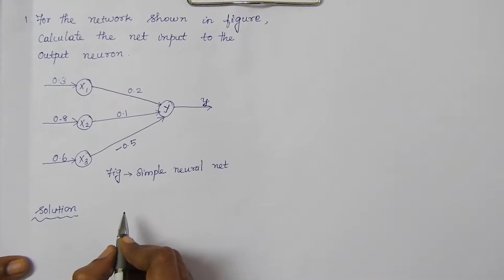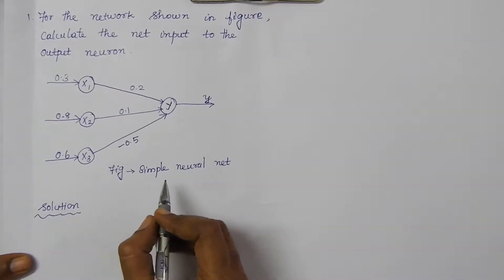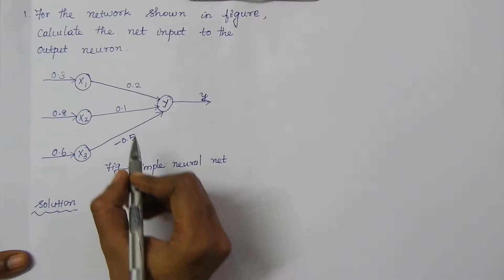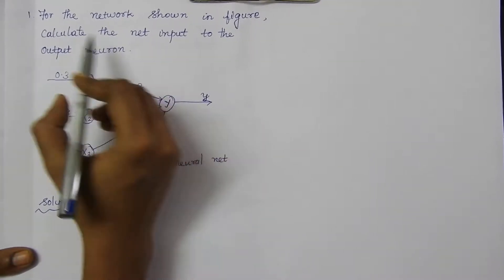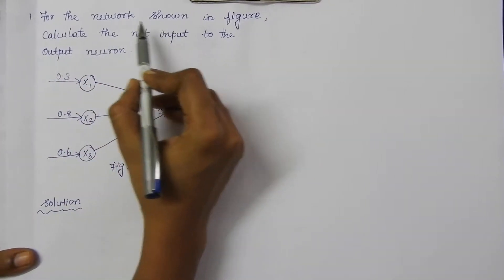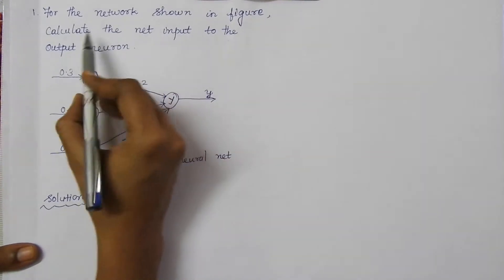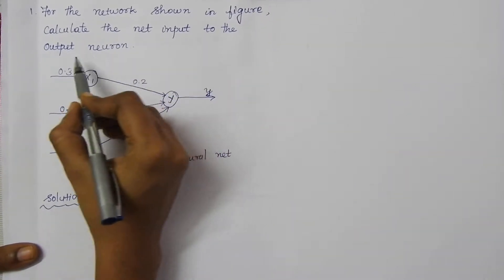Today we are going to learn about net input calculation to the output neuron. Here is one example. For the network shown in figure, calculate the net input to the output neuron.